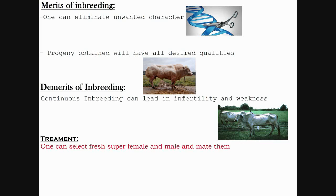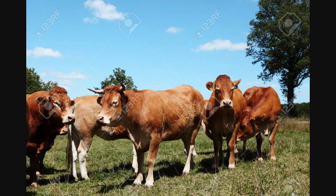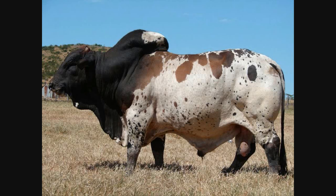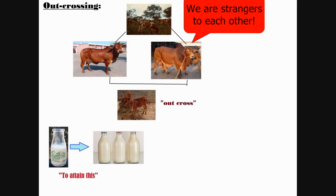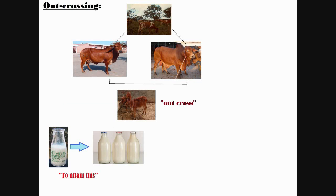Outbreeding involves breeding of unrelated animals. The unrelated breeds can be of the same breed but must not have any common ancestor for four to six generations. Different breeds or different species can also be crossed. In outcrossing, male and female of the same breed without a common ancestor for four to six generations are selected, and the progeny produced is called an outcross. This method is applied to enhance average milk productivity and also helps in restoring inbreeding depression.